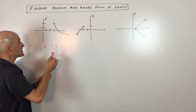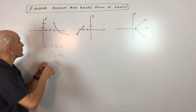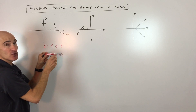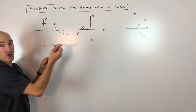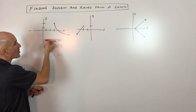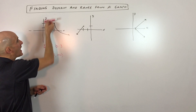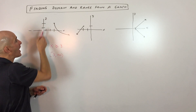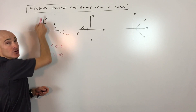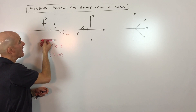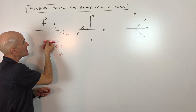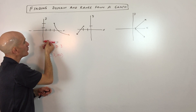Now let's look at the range — the y values. I take a horizontal line and scan from low to high, because y controls the vertical direction, up and down.